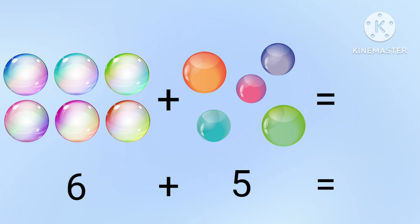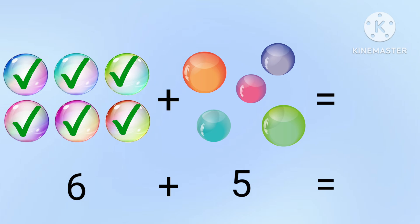Let's start counting. 1, 2, 3, 4, 5, 6, 7, 8, 9, 10, 11. There are 11 bubbles.